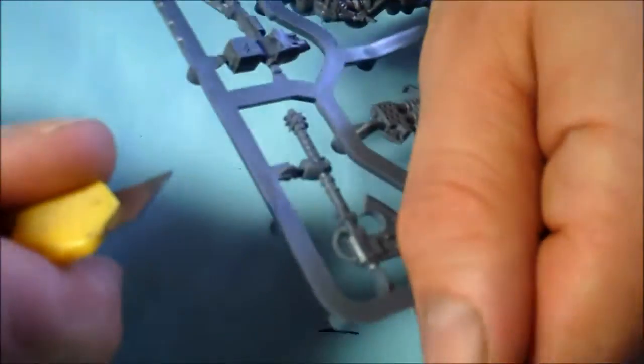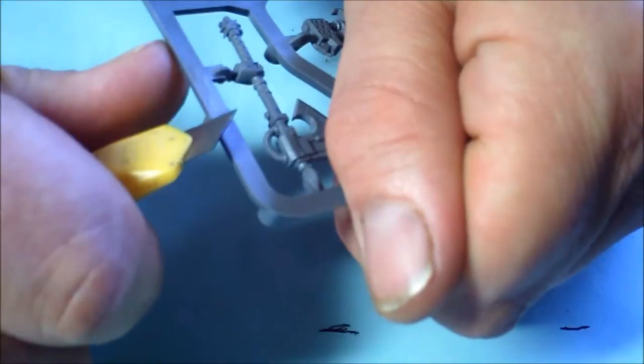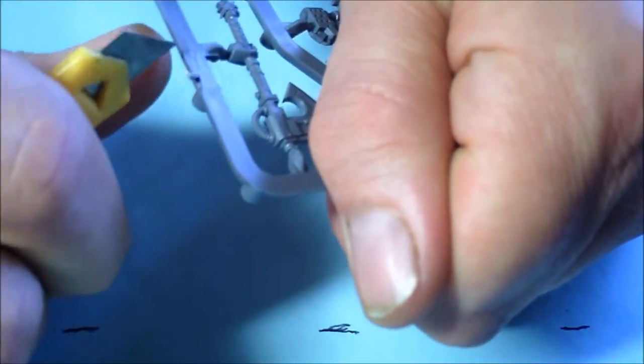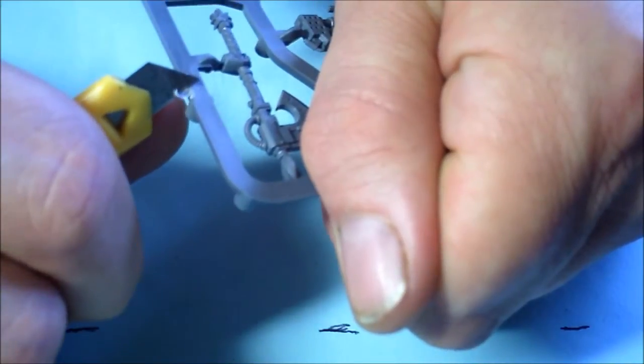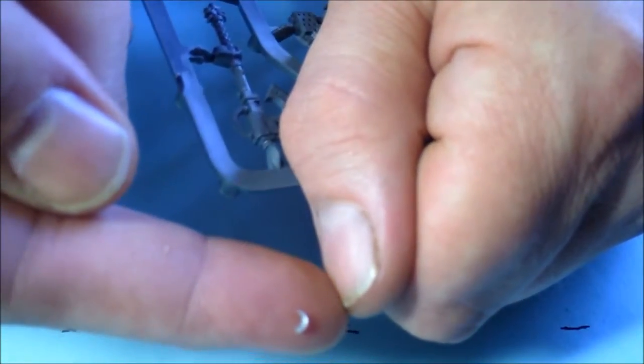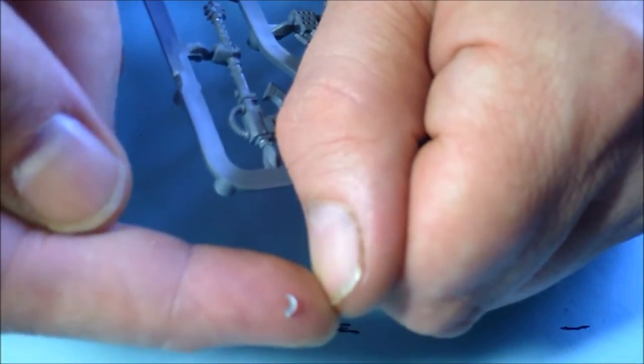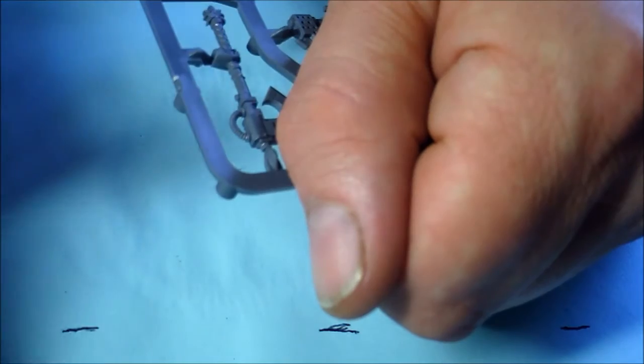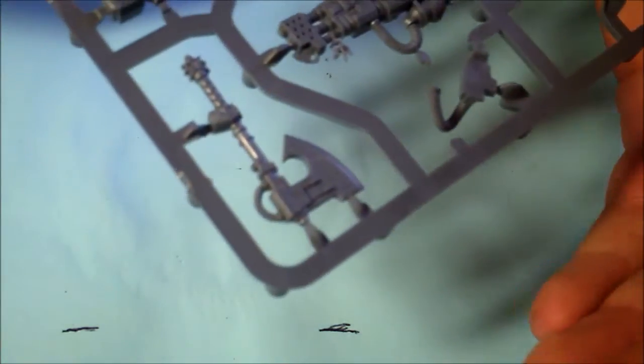So you're just taking your knife and carefully cutting into the corner edge of the sprue. And we've got a nice little quill there. See that? That's what we're looking for. And this is a really good way to put more texture into the cloth. So if you're not too confident using green stuff.